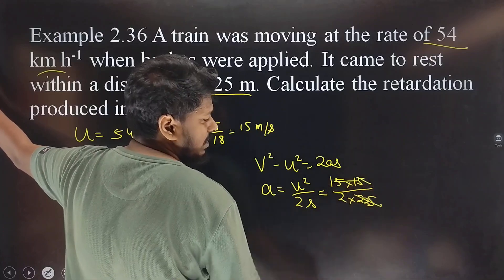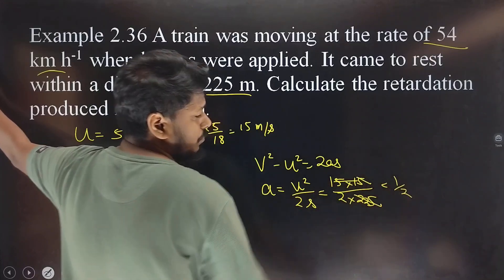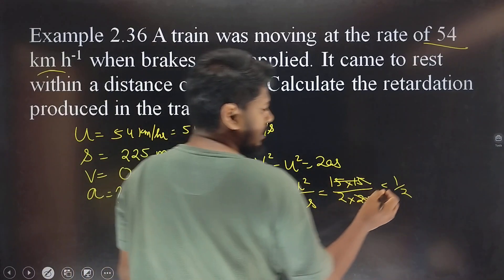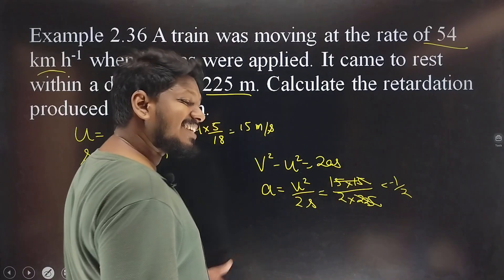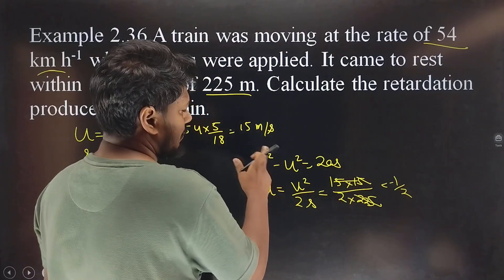15 and 225 cancel. You get 1 by 2. The negative sign represents the retardation.